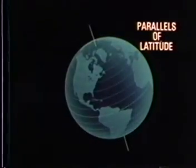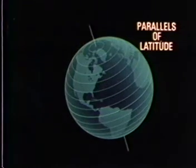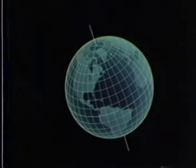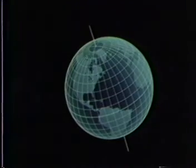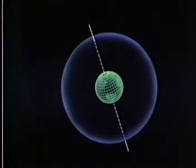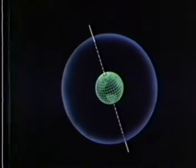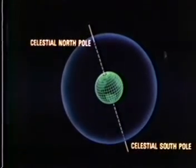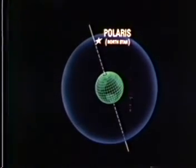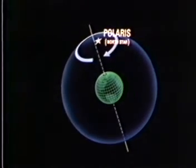Parallels of latitude are lines on the Earth's surface whose planes are parallel to the equator. The parallels are combined with meridians to provide the grid system that helps you position yourself on the surface of the Earth. There is a similar grid system on the celestial sphere. To begin with, there is an axis, simply an extension of the Earth's axis. The points of intersection of the extended axis and the celestial sphere are called the celestial north and south poles. Polaris, or the north star, is approximately at the celestial north pole, and the rest of the sphere appears to revolve around it.